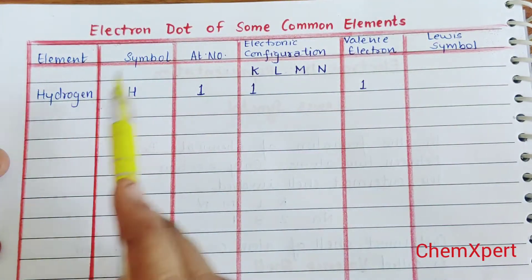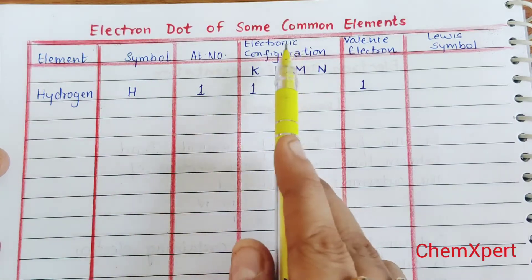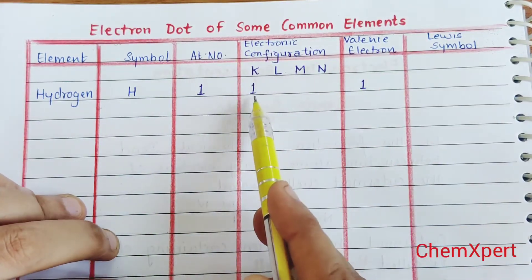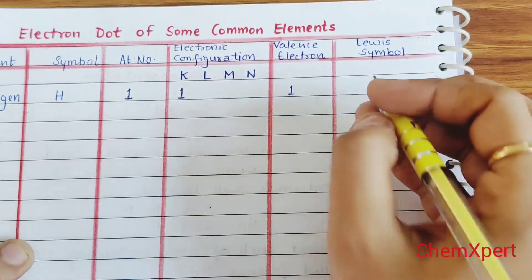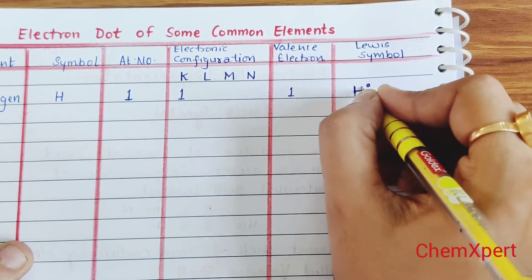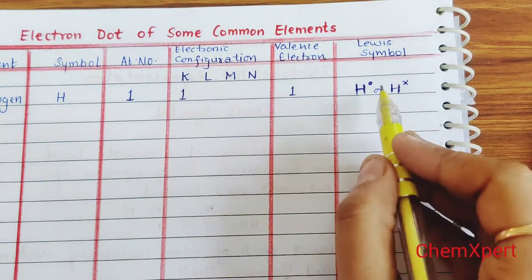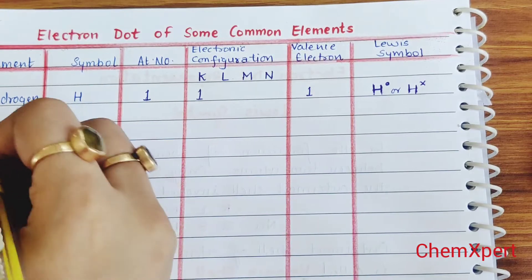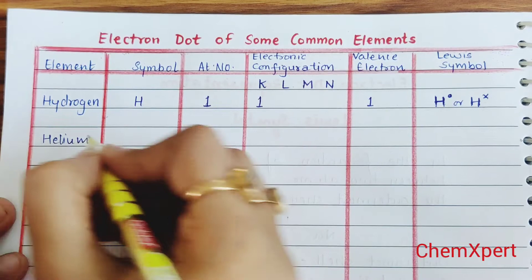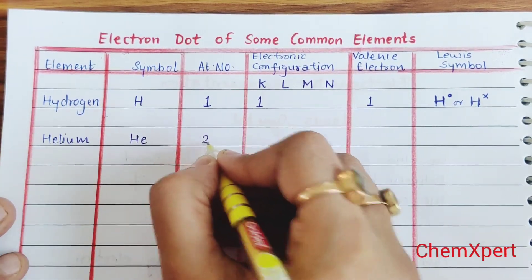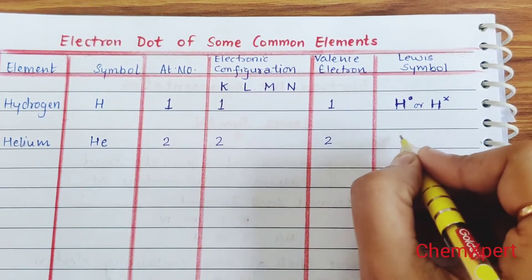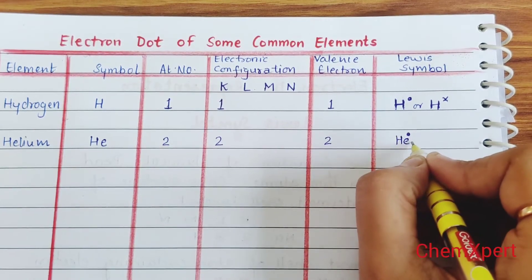Let's discuss the electron dot representation of some common elements. Hydrogen, symbol H, atomic number 1, has electronic configuration 1. The valence electron is 1, so the Lewis symbol is written as H with 1 dot — or we can use a cross instead. Helium, symbol He, atomic number 2, has 2 electrons in the K shell. The valence electron is 2, so we write 2 dots or 2 crosses.